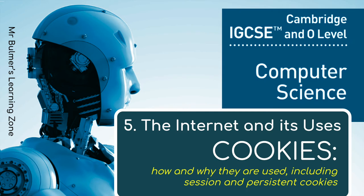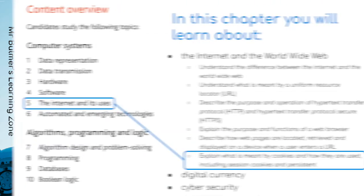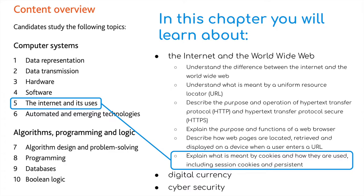Welcome back to the second video in Topic 5, The Internet and Its Uses. This is from the new syllabus 2023-2025 for iGCSE and O-Level Computer Science. In this video we will be looking at cookies — what they are used for, how they are used, and the differences between session cookies and persistent cookies. This will conclude the first section of The Internet and Its Uses, titled The Internet and the World Wide Web.